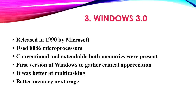Three: Windows 3.0. Released in 1990 by Microsoft. Used 8086 microprocessors. Conventional and extendable memories were both present. First version of Windows to gather critical appreciation. It was better at multitasking and offered better memory and storage.